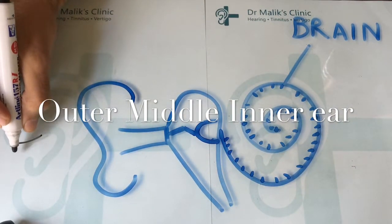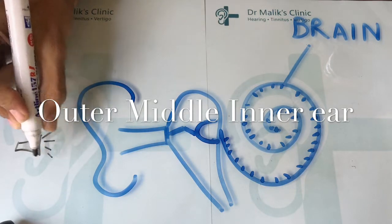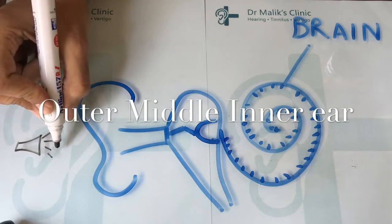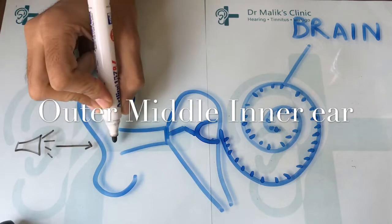The outer ear is responsible for collection of sound, which then passes on through the ear canal to the eardrum.